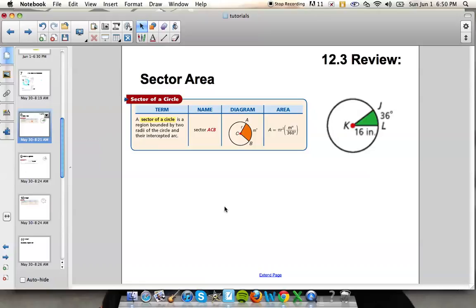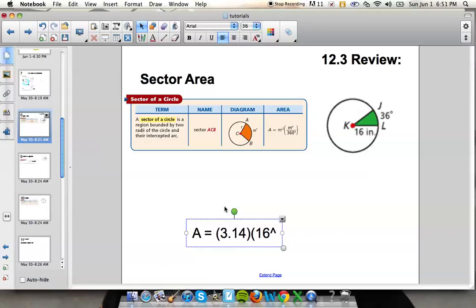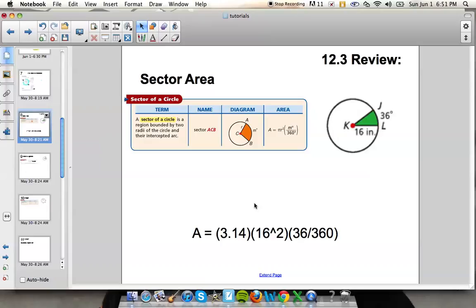This example that I have shown to the right, we have a radius of 16 and an arc of 36 degrees. To find the area we take pi times your radius squared, so 16 squared times 36 divided by 360, and that is going to be the area of your sector. So again to remember that, just take your area of a circle and multiply by the arc divided by 360.